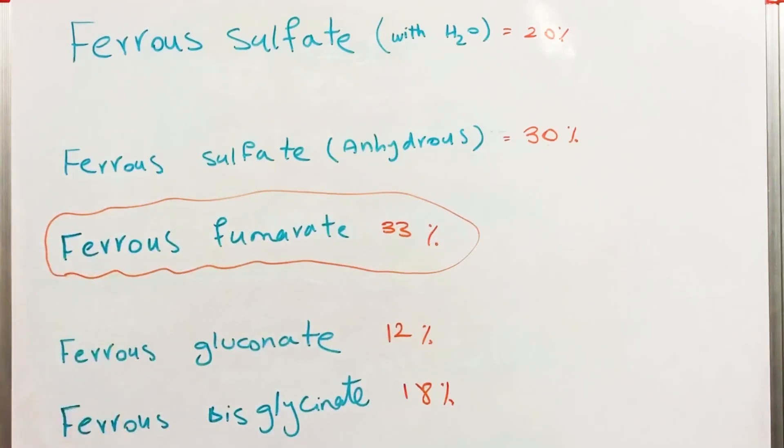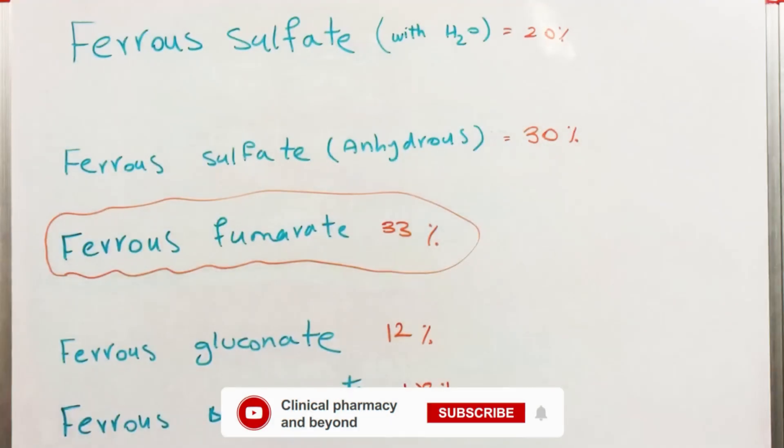So ferrous fumarate contains the most amount of elemental iron in it. Hope you enjoyed the video, please like, subscribe, and share.